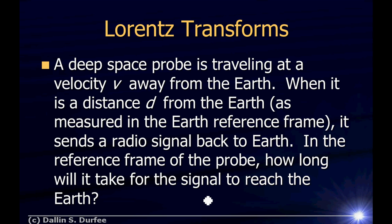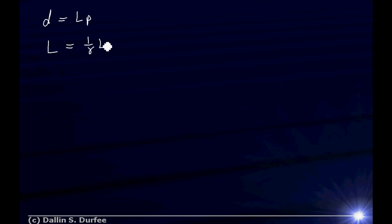We're going to say there's this distance between the Earth and the asteroid. In the Earth reference frame, we measure the proper length for that, because the asteroid is at rest with respect to the Earth. So the distance D as measured in the Earth frame is also the proper length for the distance from Earth to the asteroid. The probe, however, is going to see a length-contracted distance — that distance is 1 over gamma times the proper length. We have that equation from the book.